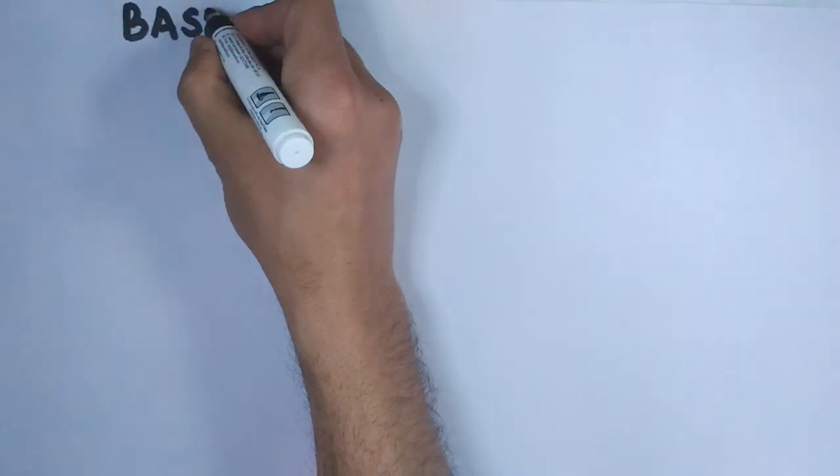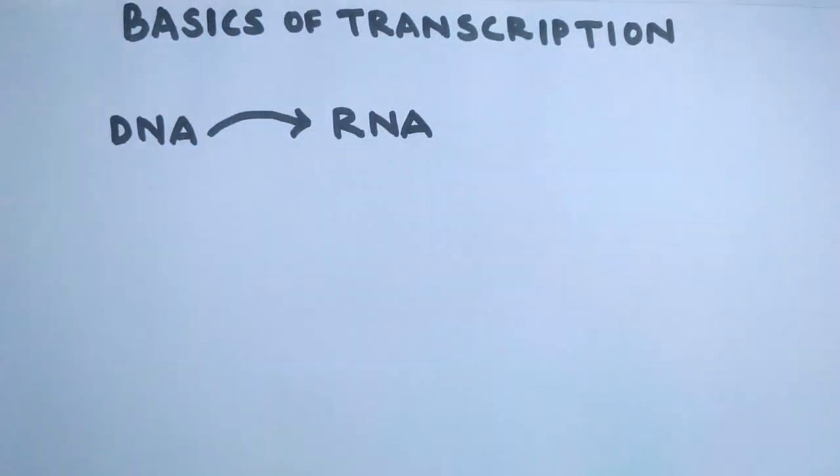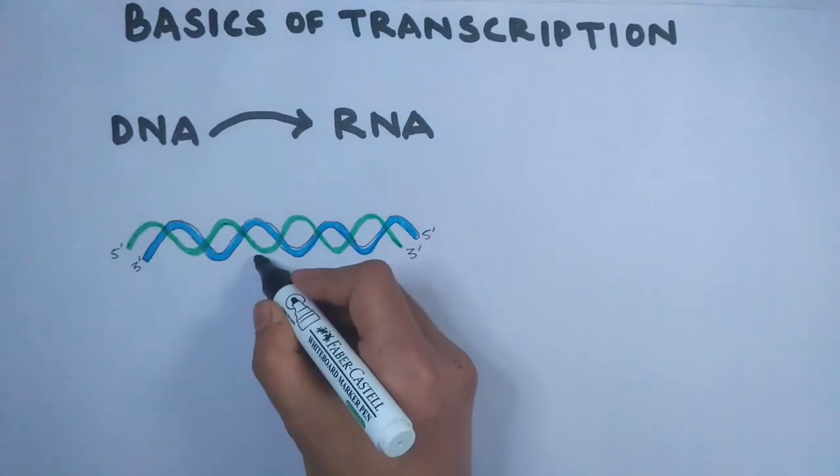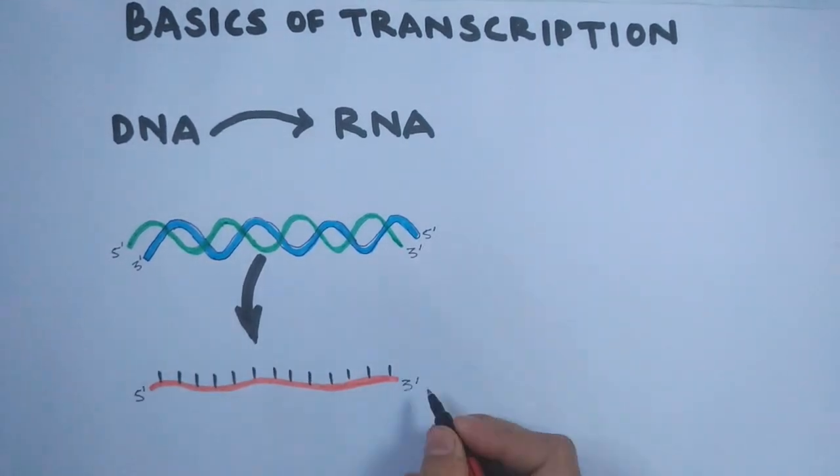In this video we'll be discussing the basics of transcription. In transcription, the genetic information present on DNA molecule is transcribed onto RNA molecule. We have a DNA molecule with two strands running anti-parallel to each other, and from this transcription we get RNA molecules in the form of a single strand.